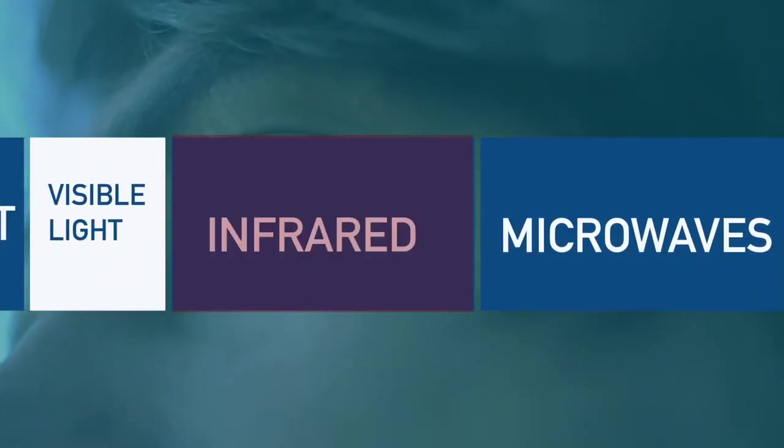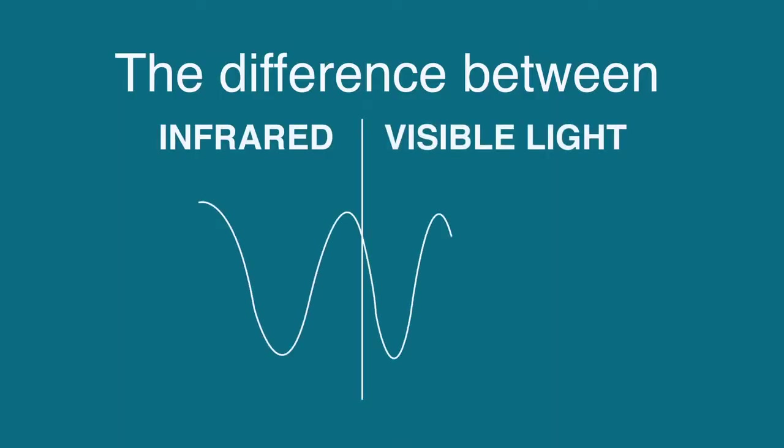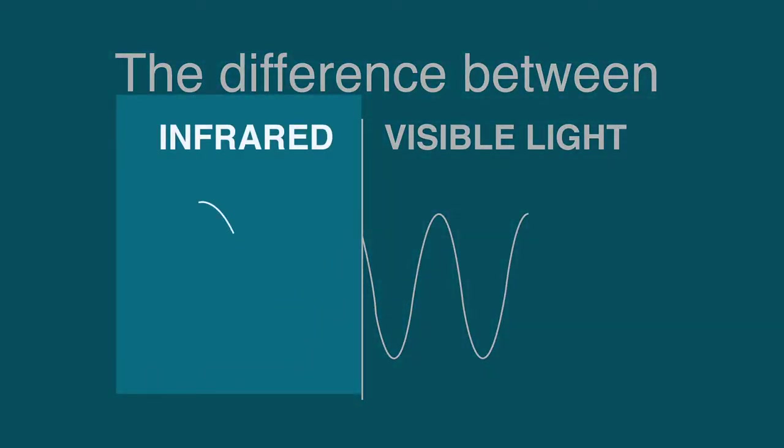Infrared radiation lies between the visible and microwave portions of the electromagnetic spectrum. The difference between infrared and visible light is the wavelength. Infrared has a longer wavelength than what we can see with our eyes.